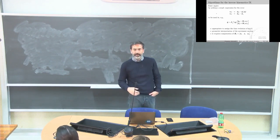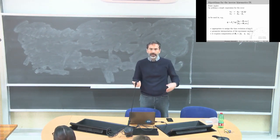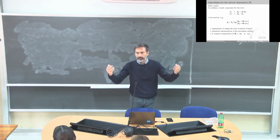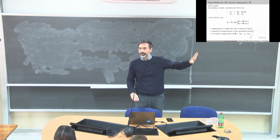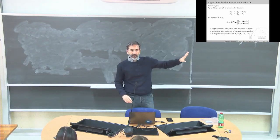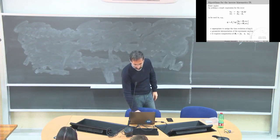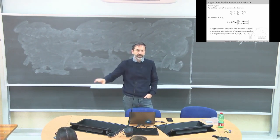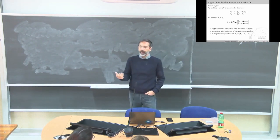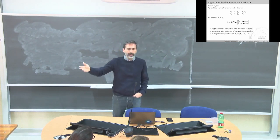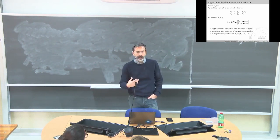Let us first consider the simplest possible expression for the orientation error: the desired quantity minus the current one, just as we did with the previous two controllers — x_desired minus x. For orientation, e_O equals phi_desired minus phi, where phi is, let's say, a roll-pitch-yaw representation — a three-dimensional vector. The desired one minus the current one.